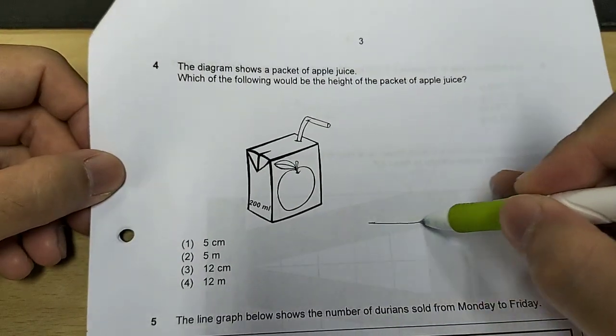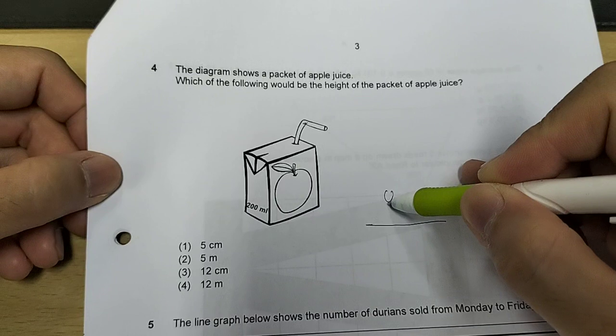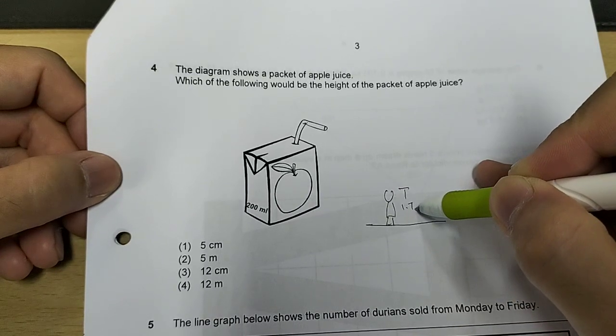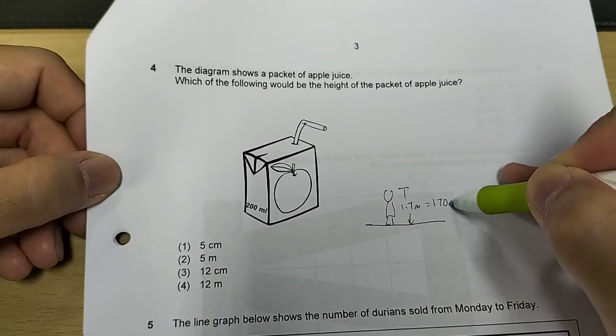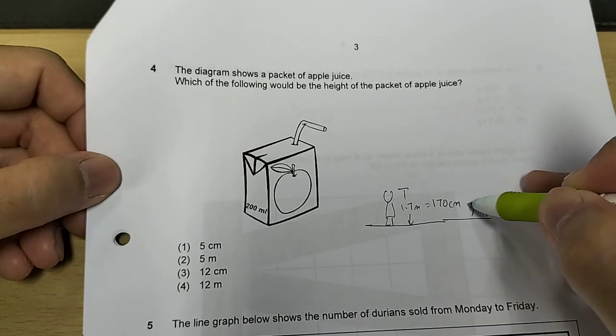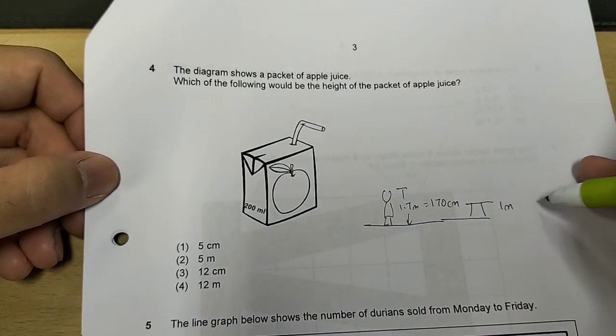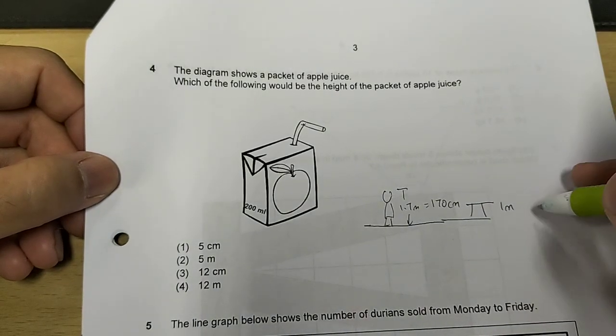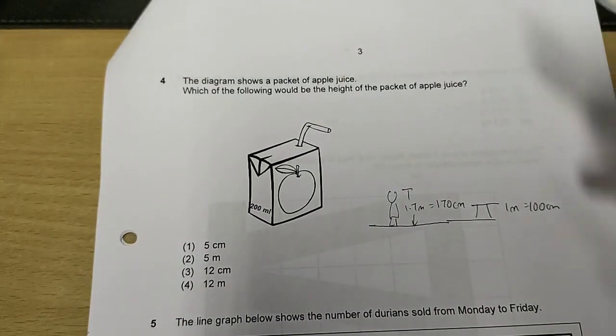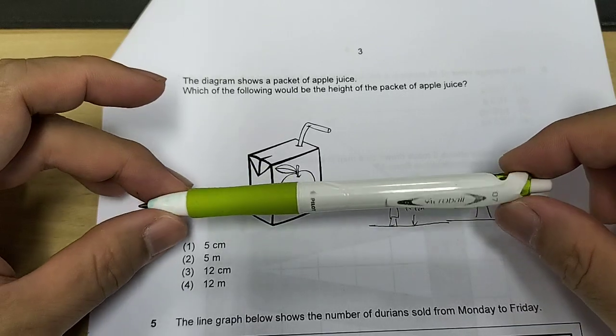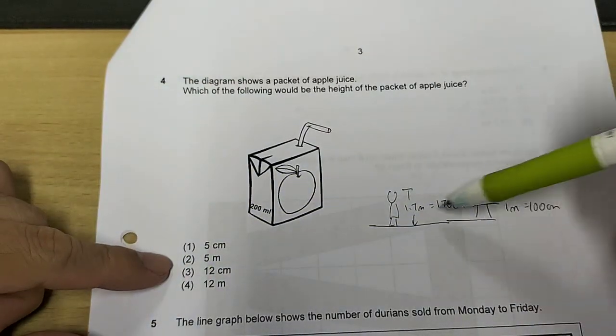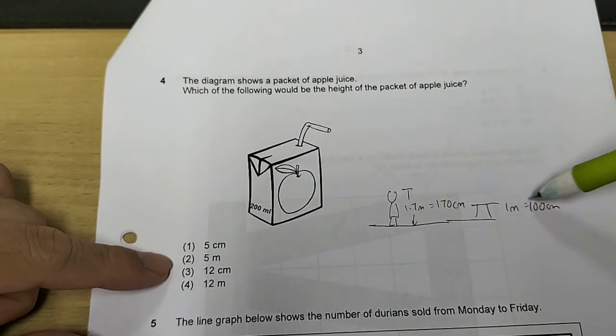For example, a person's height, let's say my height, is about 1.7 meters or 170 cm. The height of a table, for example, is roughly 1 meter, or 100 cm. The length of my pen, this pen, is roughly 10 to 12 cm.